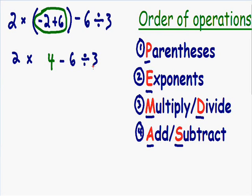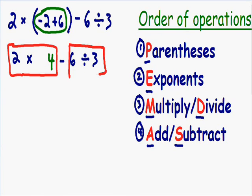Now that we have no more parentheses, we move to exponents. Since we have no exponents, we move to multiplying and dividing. We have 2 multiplied by 4, and 6 divided by 3. Since multiplying and dividing are on the same level, I like to go left to right. So first, 2 multiplied by 4 is equal to 8.